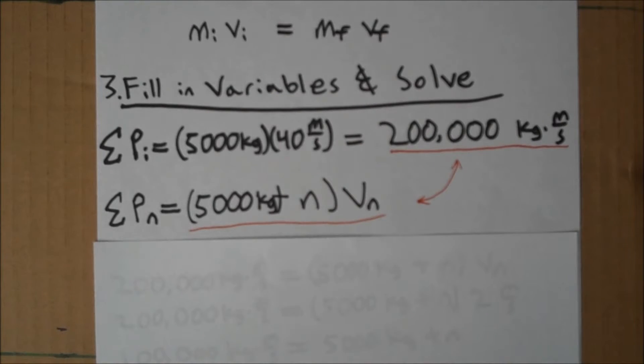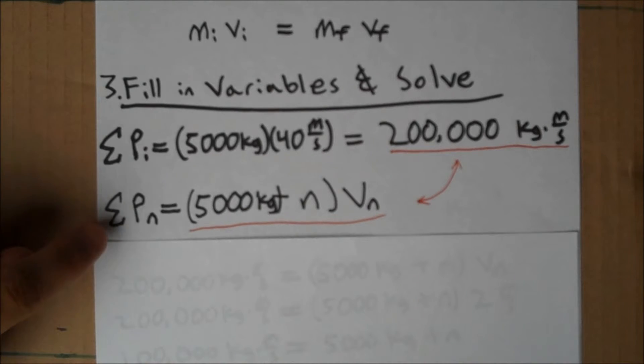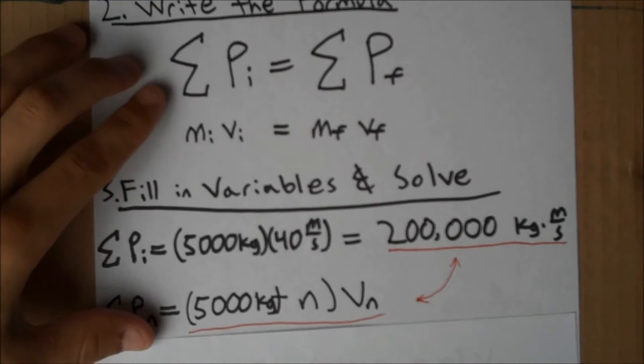Now, because of the law of conservation of momentum, as we know, the initial momentums must be the same as the final momentums after all of the collisions by conservation of momentum.